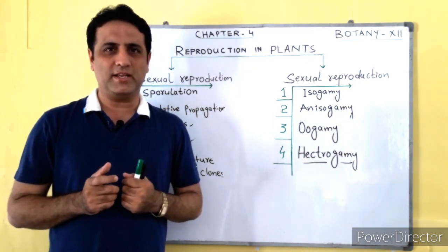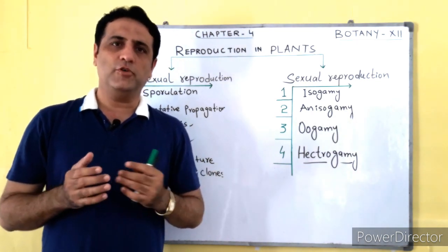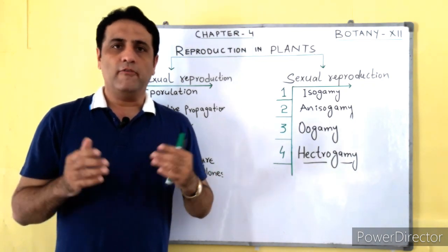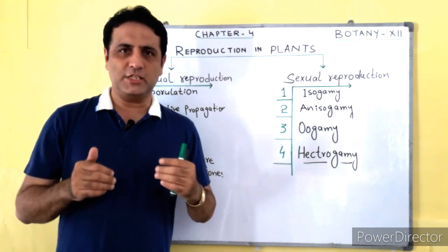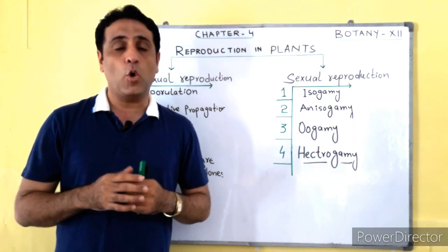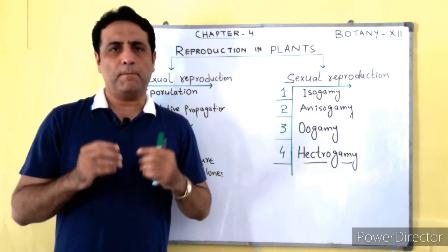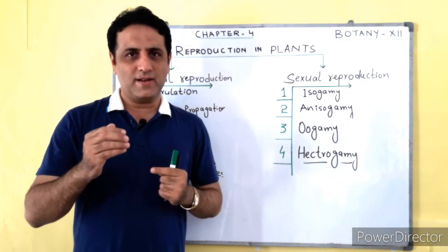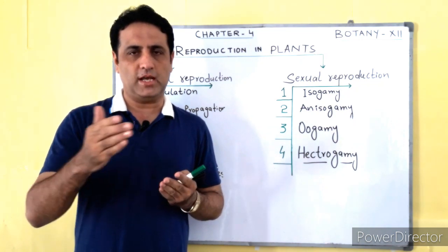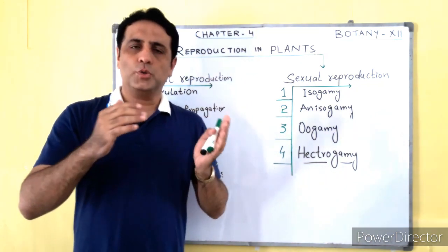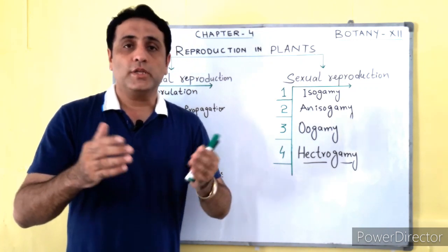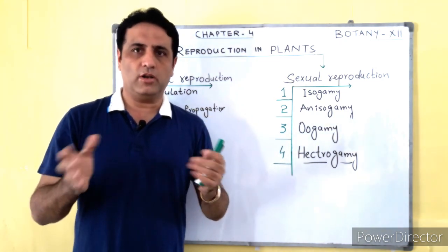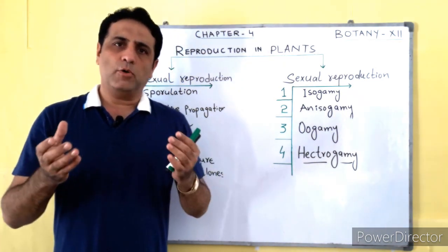Reproduction is a process in which new offspring is produced, or it is a process in which an organism produces its own kind of organism. We all know that every organism in this world possesses the capability to produce their own kind of offspring. The purpose of reproduction is continuity of life from generation to generation, to transfer hereditary characters from one generation to the other, and to aid new characters to evolution. So reproduction is basic and very necessary for all living organisms.